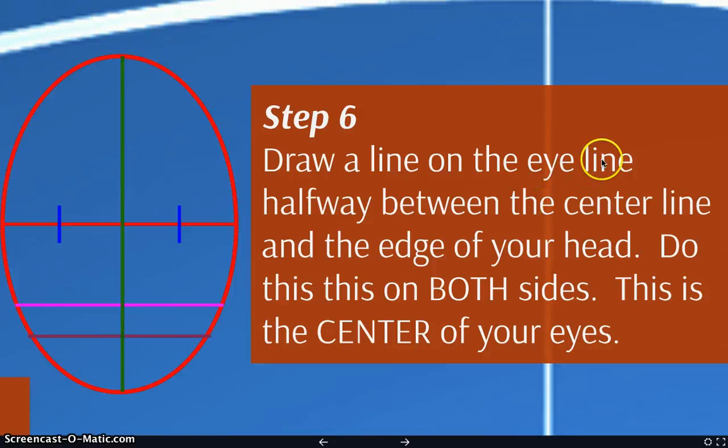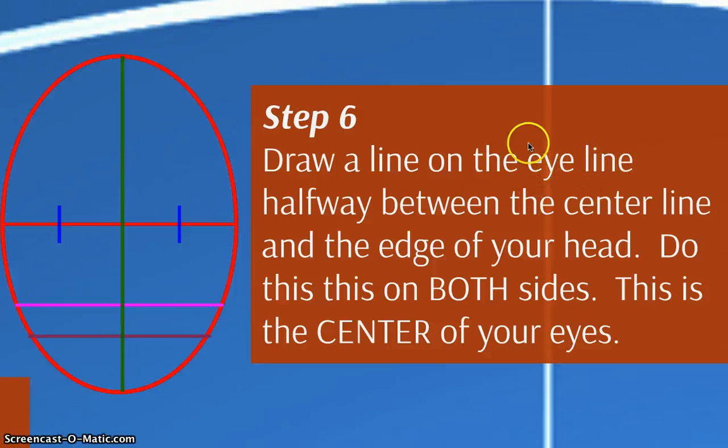Step six. You're going to draw a line on the eye line that divides that eye line in half. So, we're going back to that eye line, and halfway down that eye line, you draw a line. Once again, this is halfway. That means you need to check and make sure both sides are equal.